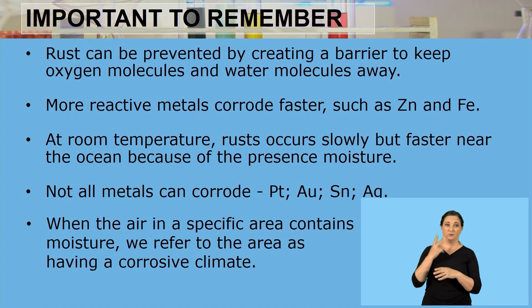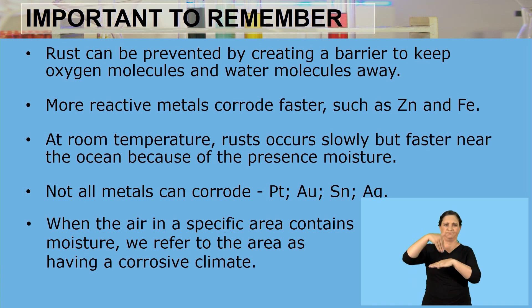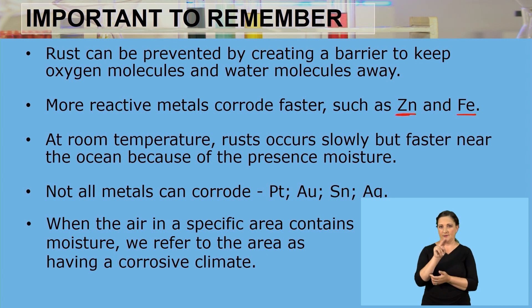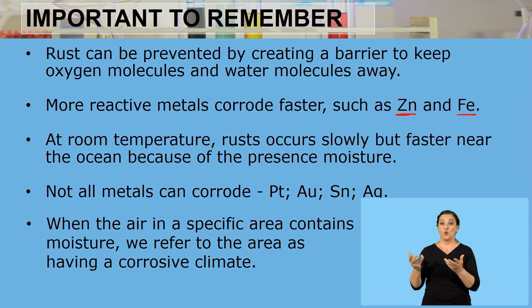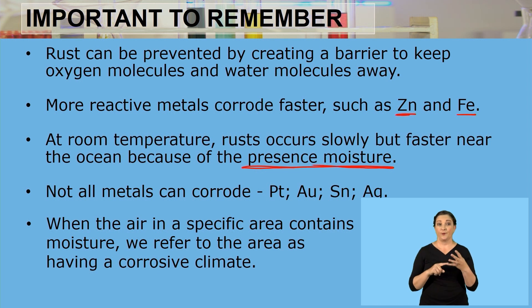What I always want you to remember from this lesson is the following. Rust can be prevented by creating a barrier to keep oxygen molecules and water molecules away. Furthermore, more reactive metals corrode faster, such as zinc and iron. At room temperature rust occurs slowly, but faster near the ocean — because there's a presence of moisture in that area.